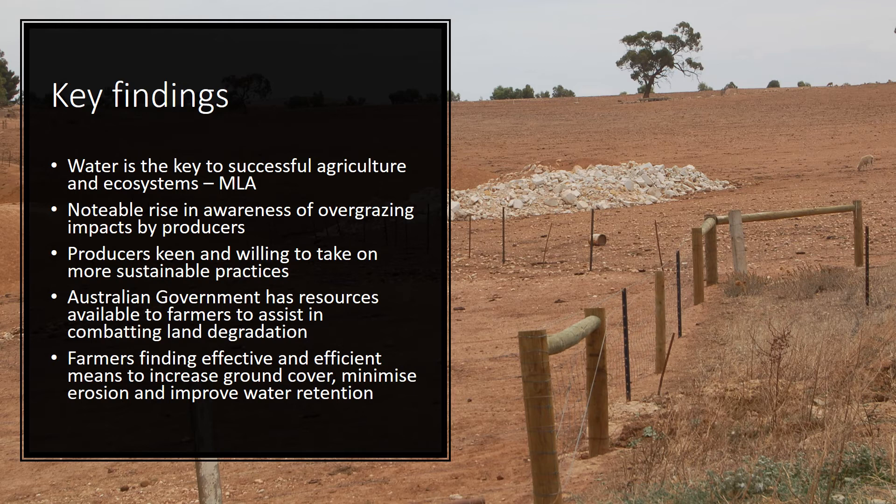Meat and Livestock Australia describe water as the key to successful agriculture and also to the health of all involved ecosystems. Research shows that there has been a notable rise in the number of livestock producers becoming aware of the detrimental impact that overgrazing and incorrect pasture management has on their land. Many of these farmers are now keen to begin a more sustainable production enterprise to help maintain and protect the environment that they are involved with.